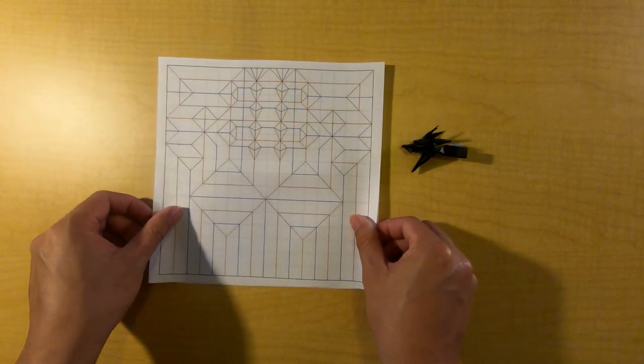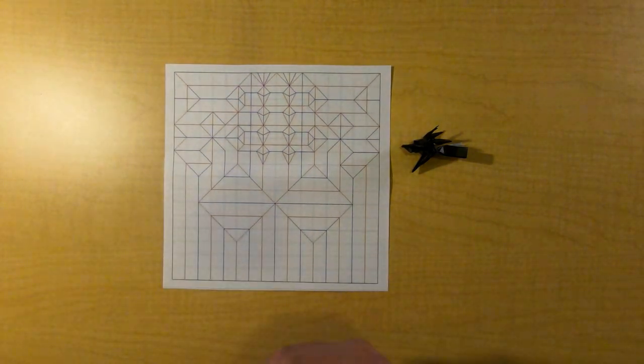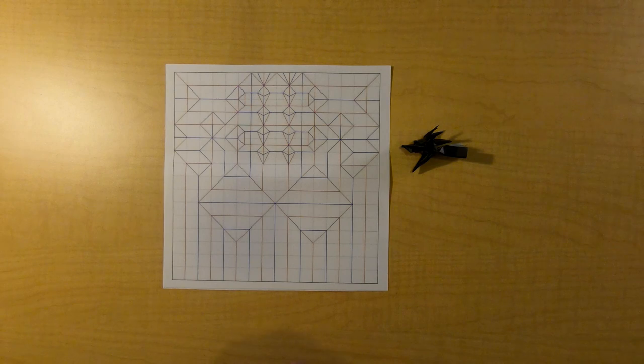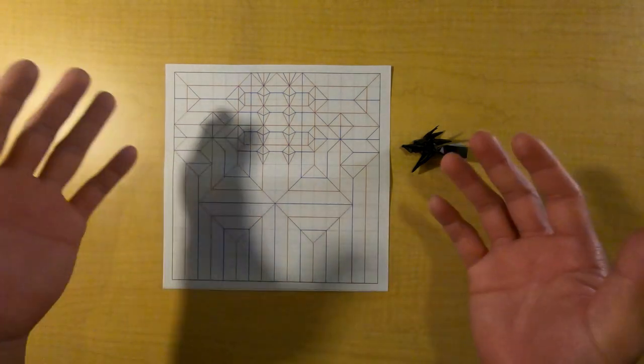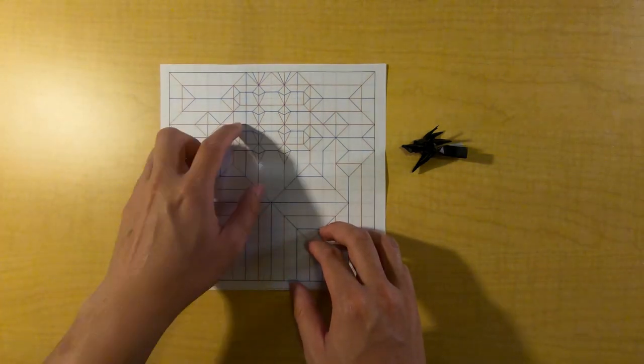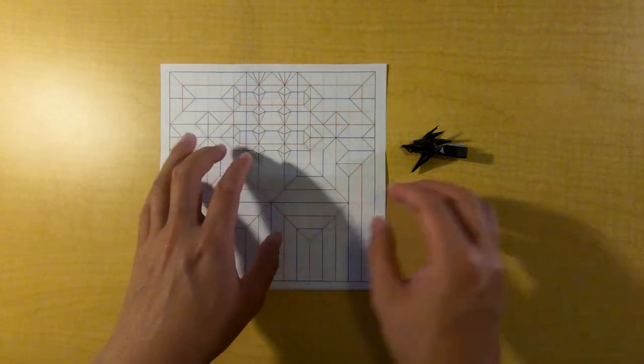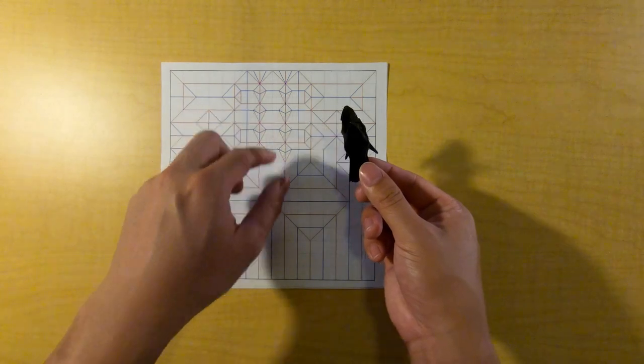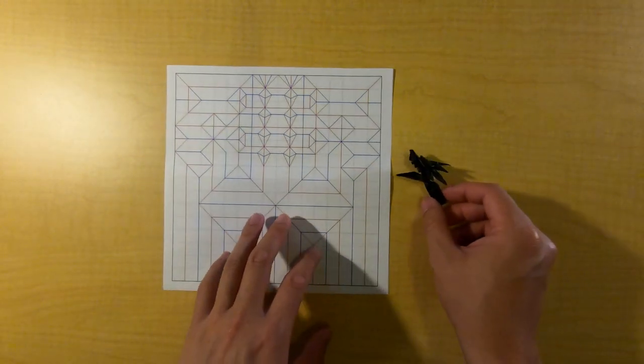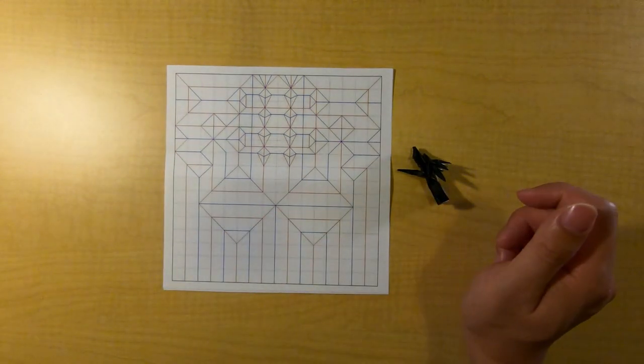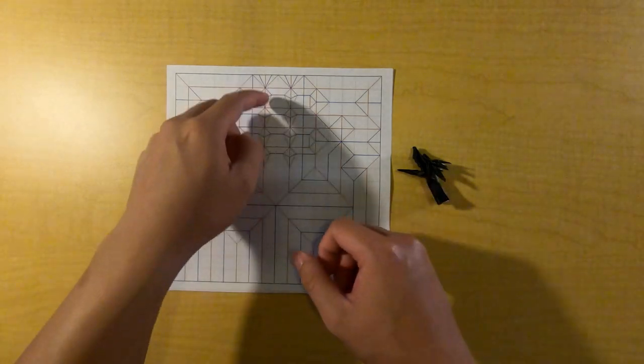I will also have this version of the crease pattern included in the folder where you can find all of them. This one you can more clearly see these transition units. It also has the teeth which are pretty simple as well, and if you follow the Origami Sage tutorial that I mentioned then you know how to do these.